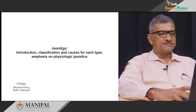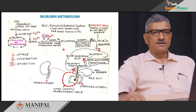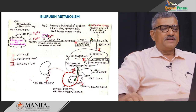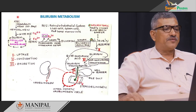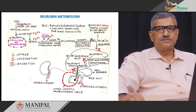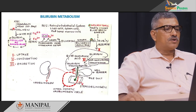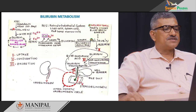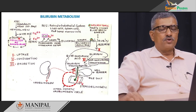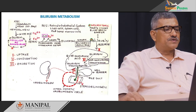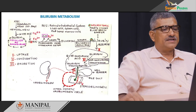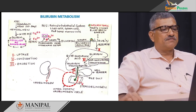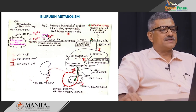Before we go into the details of jaundice, it is necessary to know the metabolism of bilirubin in our body. The lifespan of RBCs is about 120 days, after which it undergoes breakdown to release hemoglobin. Hemoglobin is made up of two parts: the prosthetic part heme and the protein part called globin. The protein part globin is recycled in the form of its constituent amino acids, and the heme further undergoes degradation in the reticuloendothelial system of liver cells, spleen cells, and red bone marrow cells.